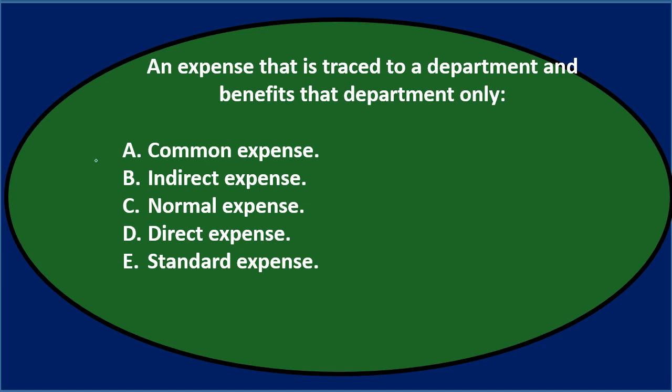Let's go through this using the process of elimination. An expense that is traced to a department and benefits that department only — is it A, a common expense? That sounds like an unusual term, not one we're typically using here. B says an indirect expense. But if it goes right to the department, it seems pretty direct, so I'm going to say no.